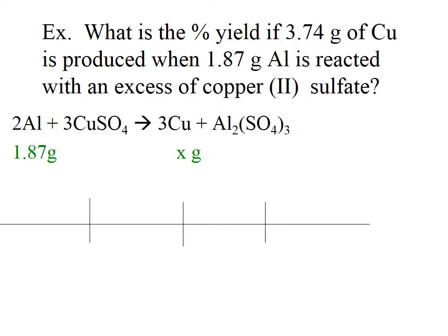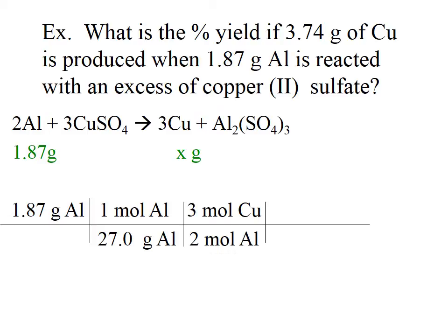We start with a grams-to-grams conversion. Grams of aluminum, we go to moles of aluminum. From moles of aluminum, we go to moles of our product — copper — using the mole ratio from the balanced equation, which is 3 to 2. So we have 3 moles of copper to 2 moles of aluminum. Then once we have that, we can go to grams of copper by multiplying by the atomic mass of copper. And that gives us 6.60 grams of copper — so 6.60 is our theoretical yield.